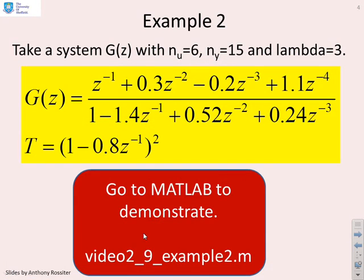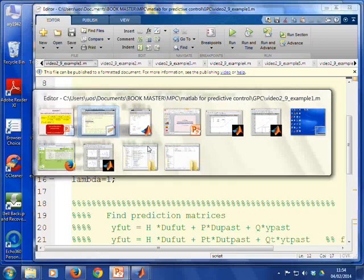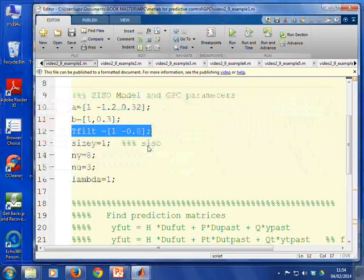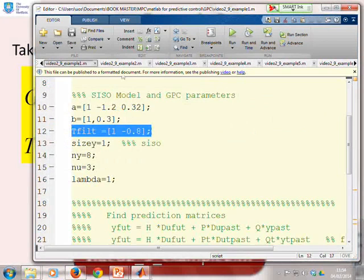A different example for completeness. Here we have a more complicated G of Z, NU is bigger, NY is bigger, and T is now a quadratic rather than a single term. So it's slightly more complicated, but otherwise equivalent.